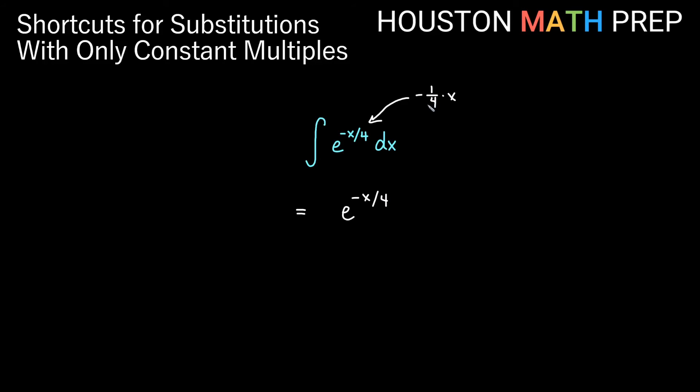And we would multiply out front by the reciprocal of this. So that would be a negative 4 in the front. So we would get negative 4 e to the negative x over 4 plus our constant.